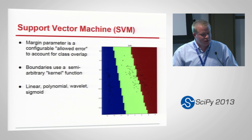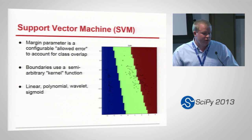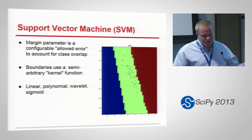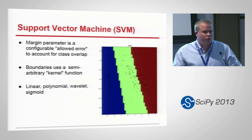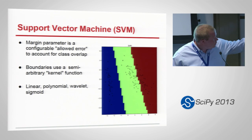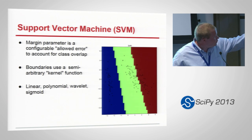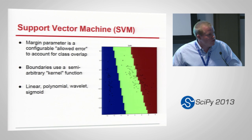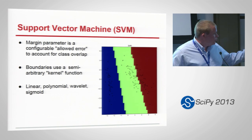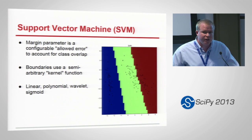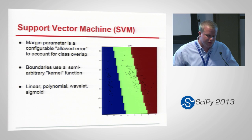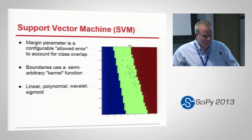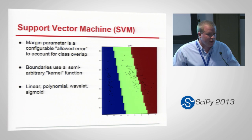Support vector machines are another classification algorithm — kind of the gold standard black box for a lot of everyday people getting into machine learning. It has a margin parameter that basically allows it to miss some classifications without running off the rails. You can see along the red and green boundary there are a couple errors in classification, but overall it does a pretty good job of classifying what goes where. This was the petal dataset from sklearn. You're also able to draw different boundaries than just linear ones — curved boundaries, polynomials, wavelet boundaries, sigmoid boundaries. There's a lot of depth here.